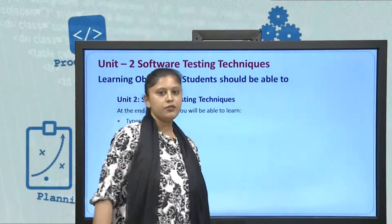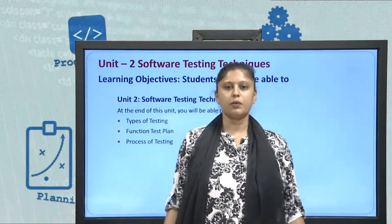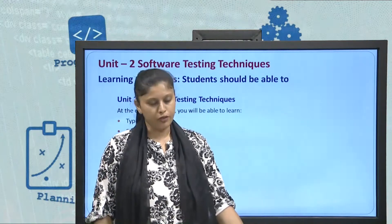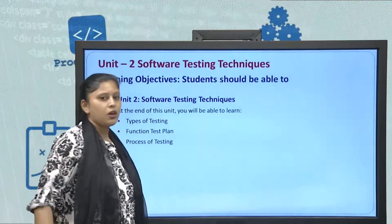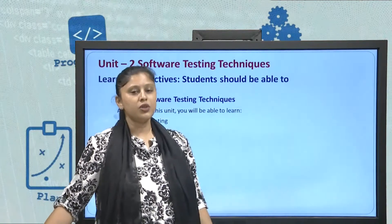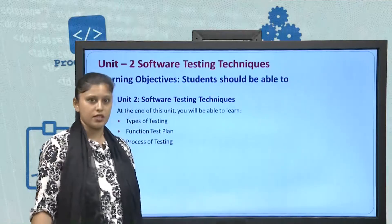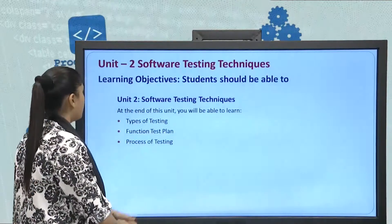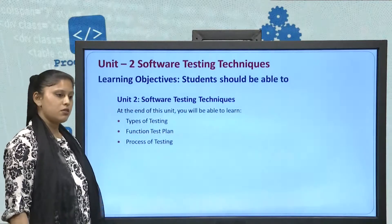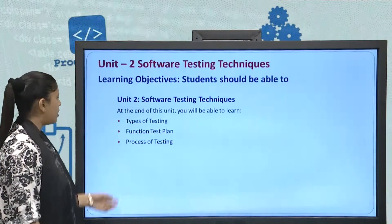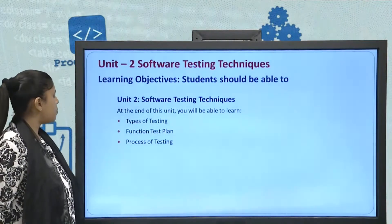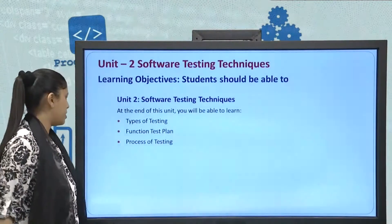Welcome again. We are here for video lectures on the subject software engineering. We have already seen unit 1 of block 2, which was regarding quality control and capability maturity model. Today we will be seeing unit 2, which is all about testing and its techniques. The name is software testing techniques. At the end of this unit you will be able to learn the types of testing, what is a function test plan, and what is the process of testing.